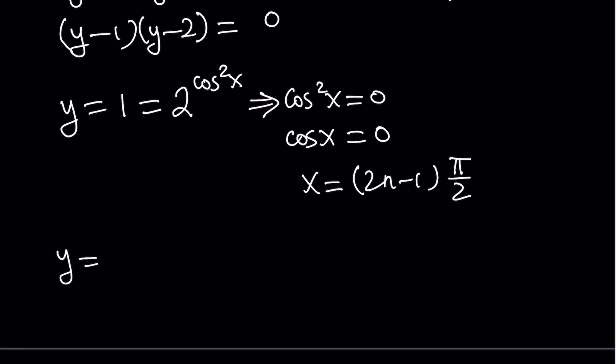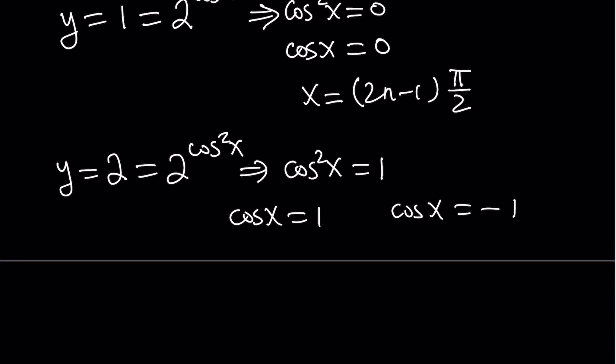Okay, the second solution comes from y equals 2. If you set that equal to 2 to the power cosine squared x, from here, you get cosine squared x equals 1. But this gives you two solutions, either cosine x is equal to 1 or cosine x is equal to negative 1. Okay, great.